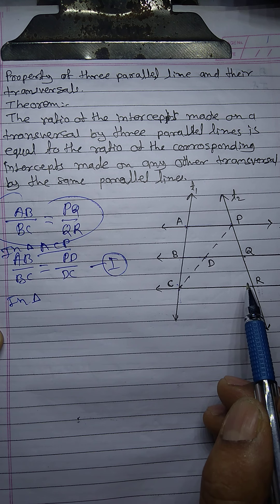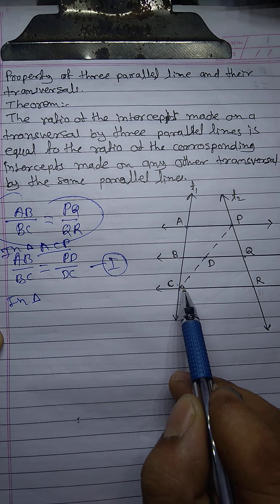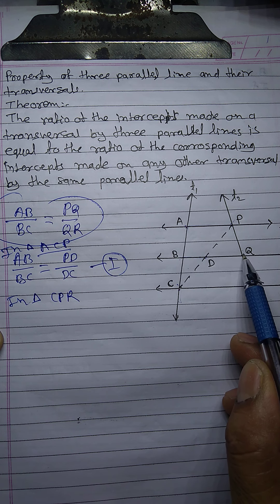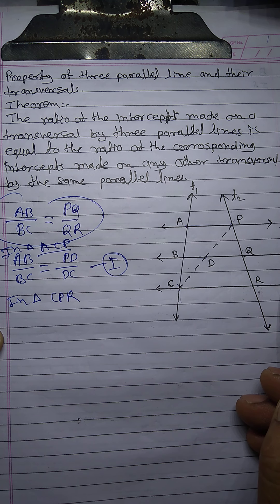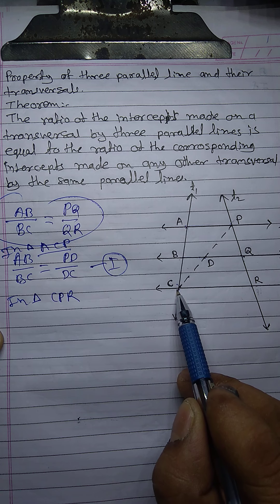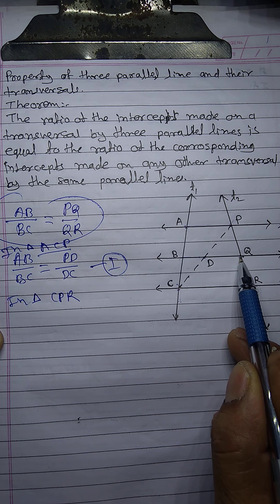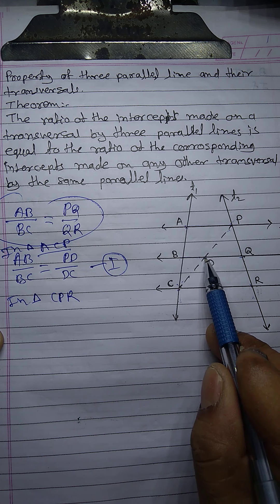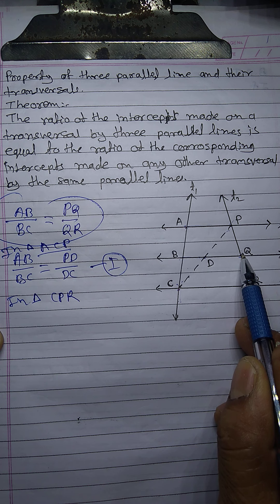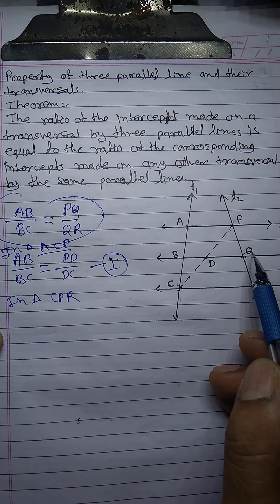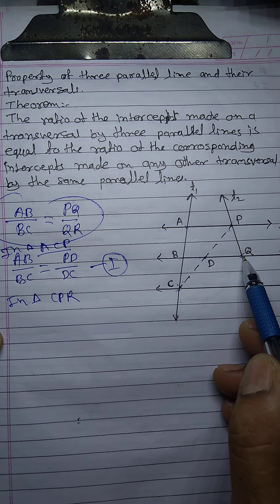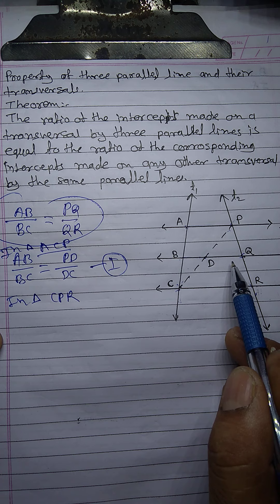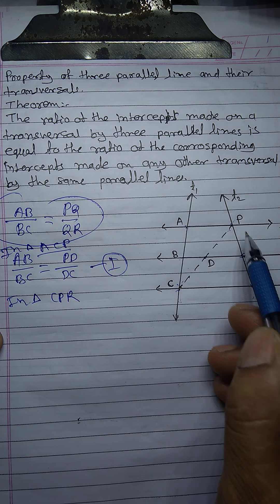Now consider the second triangle CPR. In triangle CPR, line DQ is parallel to CR. This line is parallel to one side and intersects the remaining two sides at different points. By BPT applied to triangle CPR, the ratio PD upon DC is equal to PQ upon QR.